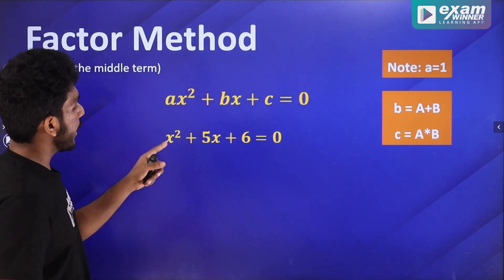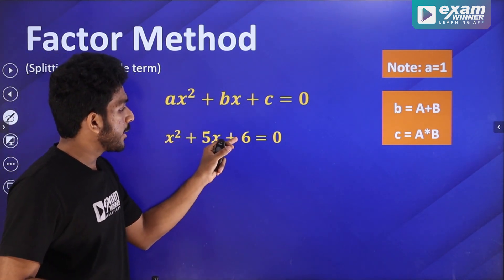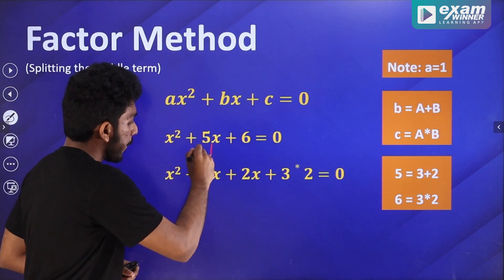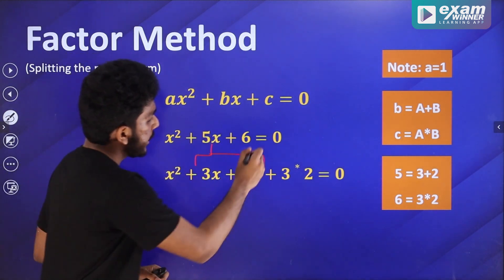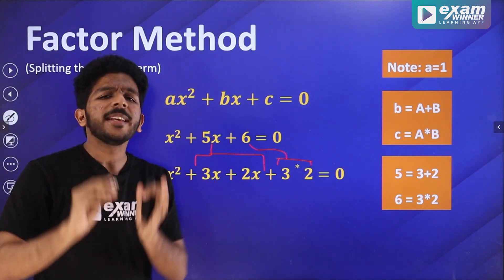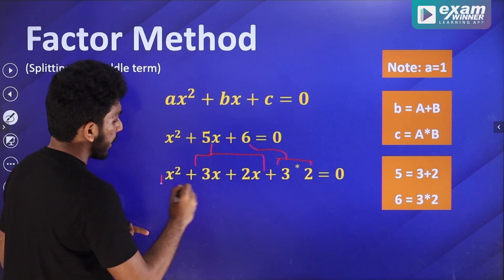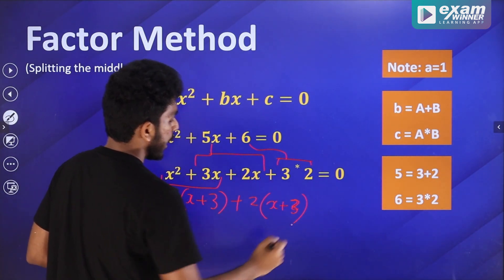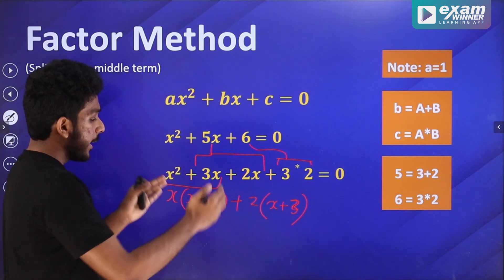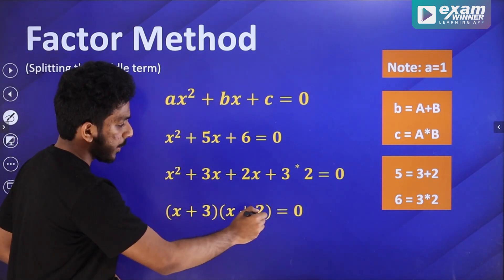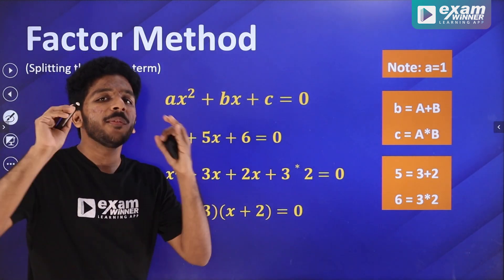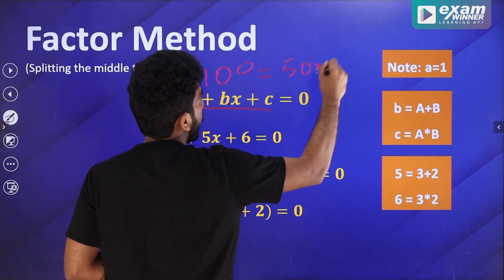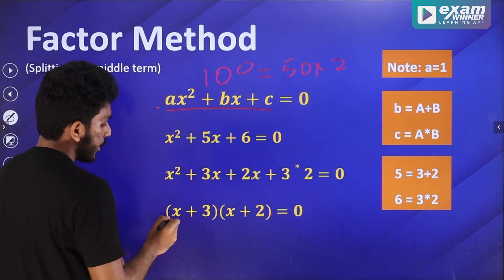Now we split the middle term. We have x squared plus 5x plus 6 written as x squared plus 2x plus 3x plus 6. This 5x becomes 3x plus 2x. And 6 is 3 into 2. We use x squared plus 3x plus 2x plus 6, then take x(x plus 3) plus 2(x plus 3), giving (x plus 3)(x plus 2).